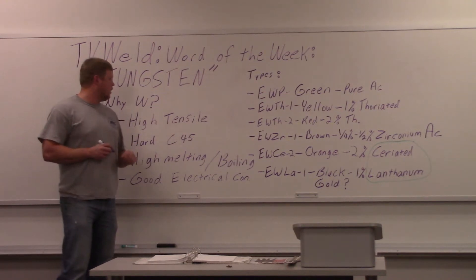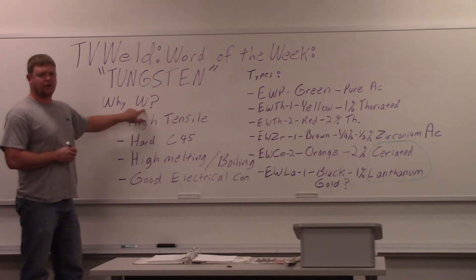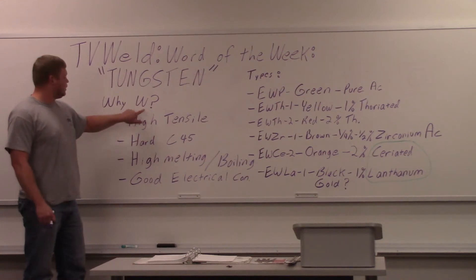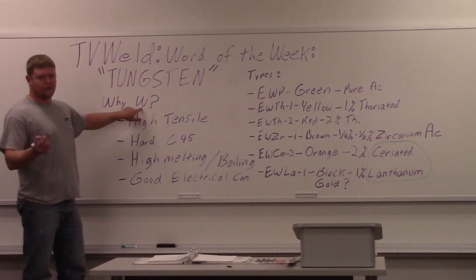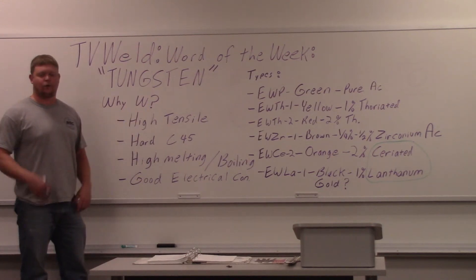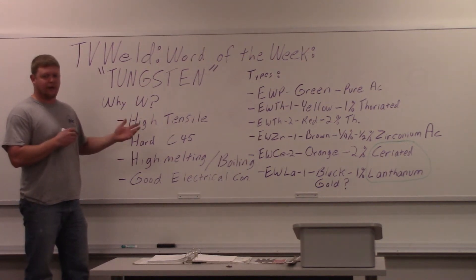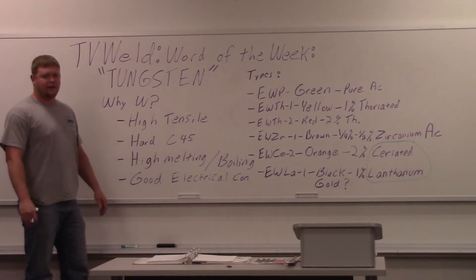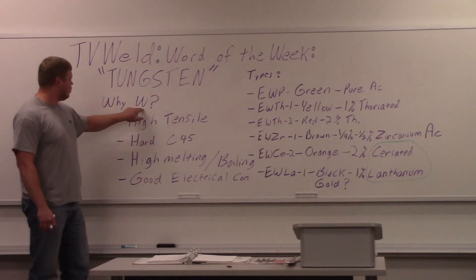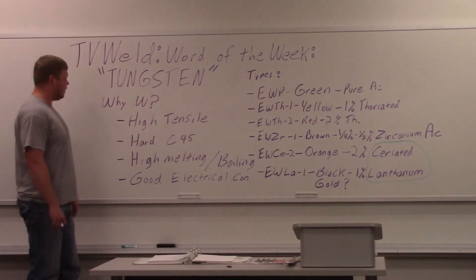Why is the atomic symbol for tungsten 'W'? Everyone asks why it isn't 'T', 'Tu', or 'Tn'. It comes from a mineral called wolframite, or wolfram, and that's why it's labeled W. Usually with the periodic table of elements, if a symbol doesn't match the word, it comes from something in a different language or a different mineral that people may not know about.